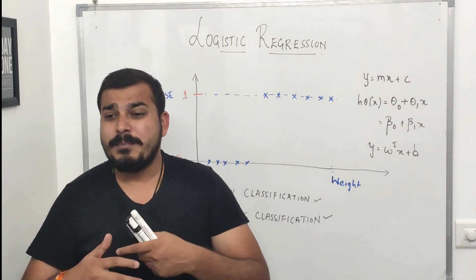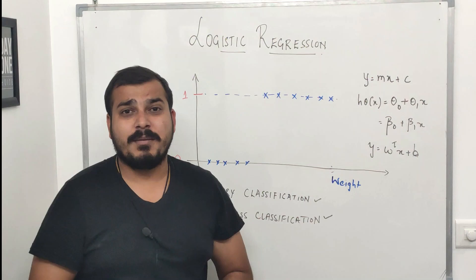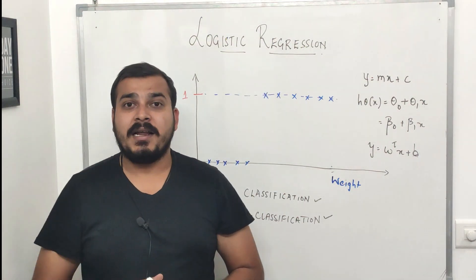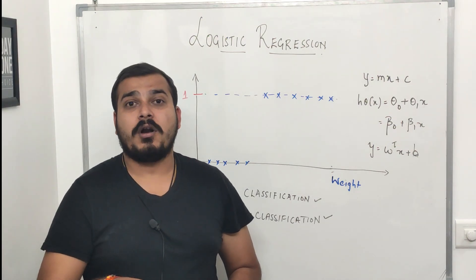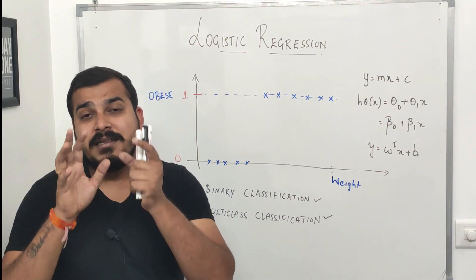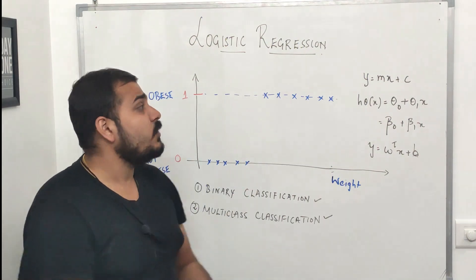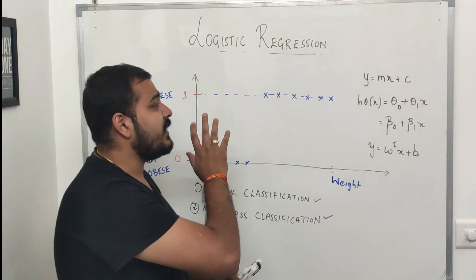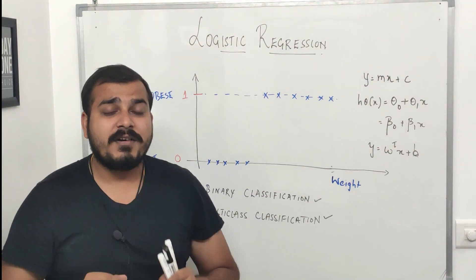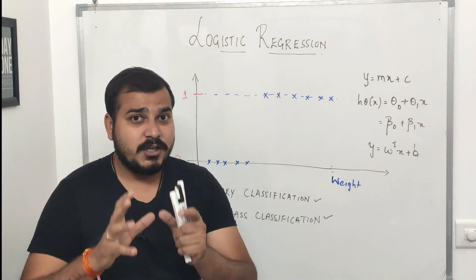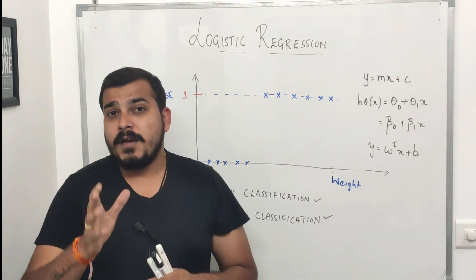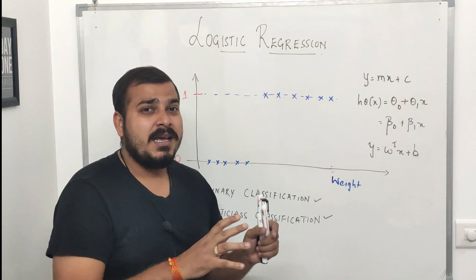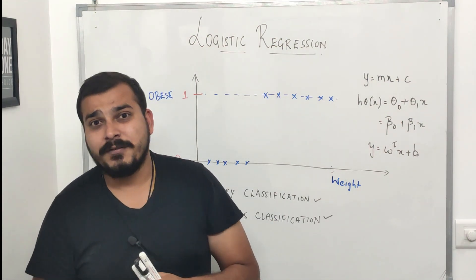I've shown in many videos how to do hyperparameter optimization and more. Understanding the math is very important because it helps with hyperparameter optimization and in interviews, where they will ask you the math behind machine learning algorithms. In this video we'll understand logistic regression — this is part one. If you're looking for career transition advice toward data science, make sure you watch till the end as I'll share important things.